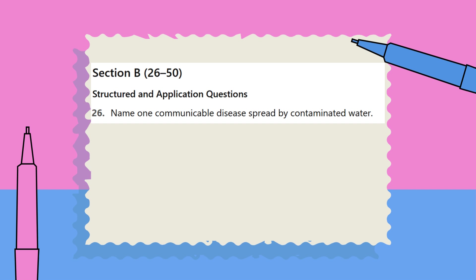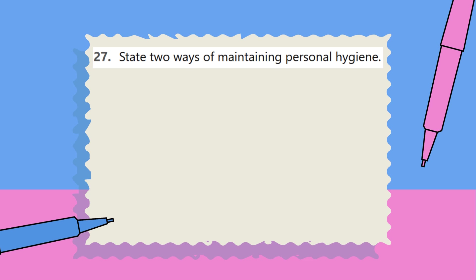Section B, Questions 26–50: Structured and Application Questions. Question 26: Name one communicable disease spread by contaminated water. Question 27: State two ways of maintaining personal hygiene.